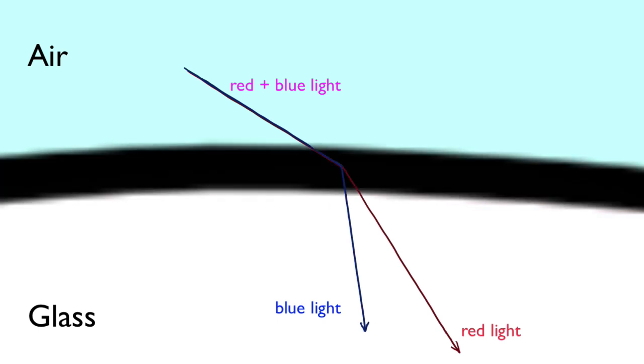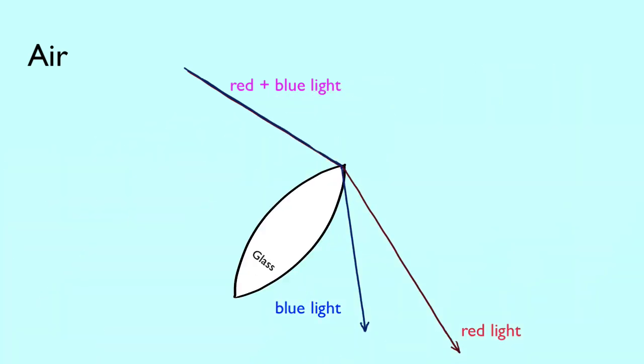This effect shows up in any glass lens and is called chromatic aberration. It results in a coloration most notable around the edges of the cast image.